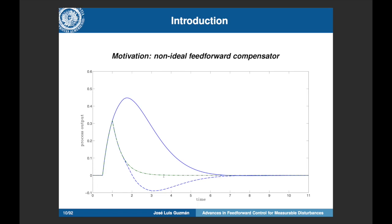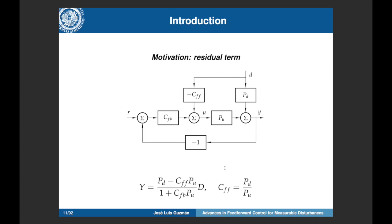When we cannot perfectly reject the disturbance, we usually obtain a response that improves slightly over feedback-only control, but now we get a strange overshoot and the response deteriorates. The motivation of this talk is to improve this response, for instance by removing the overshoot or optimizing performance metrics like the integral absolute error (IAE) or integral square error (ISE). The reason for this strange behavior is that when perfect cancellation is not possible, a residual term is fed back into the loop, causing the feedback controller to react to this unexpected signal, producing strange oscillations.